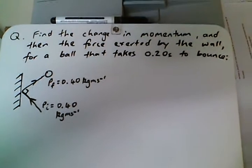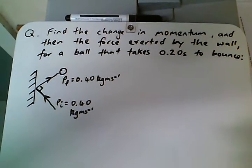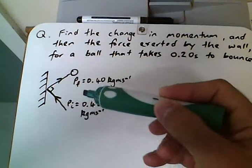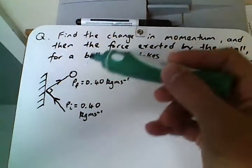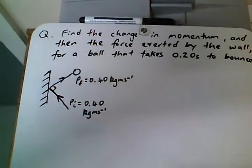Find the change in momentum and then the force exerted by the wall for a ball that takes 0.2 seconds to bounce. So you can see here we've got the ball bouncing off the wall, there's a force exerted by the wall to change the direction of the ball.